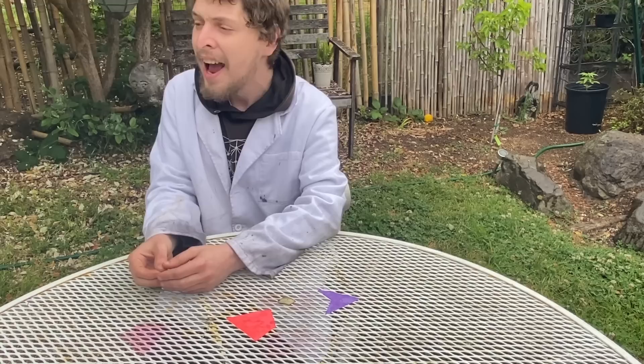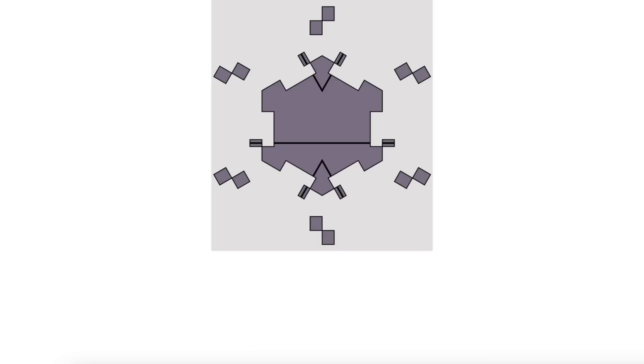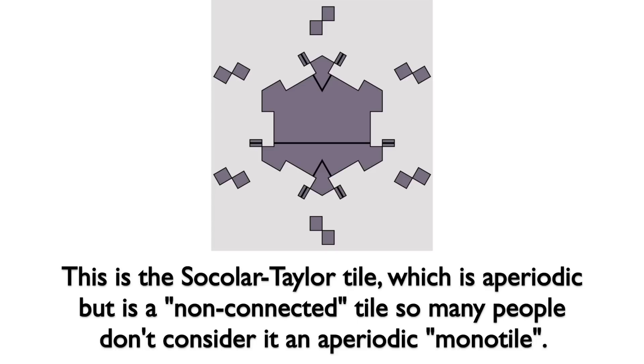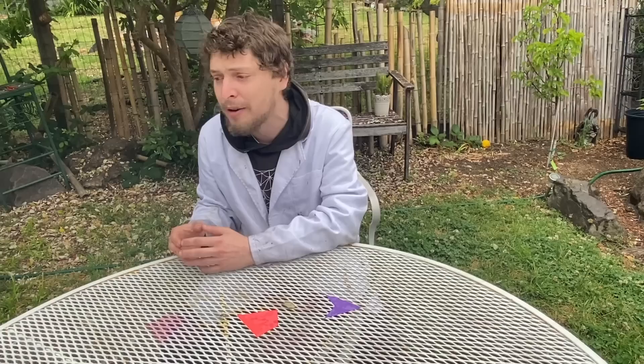However, it wasn't the end of the quest for aperiodic tilings, because not only did these have to follow matching rules, but it was also two tiles, not a monotile. And it took many years of mathematicians looking for an aperiodic monotile, sometimes making progress, but the quest continued and mathematicians could not find a single aperiodic monotile for many years until recently.